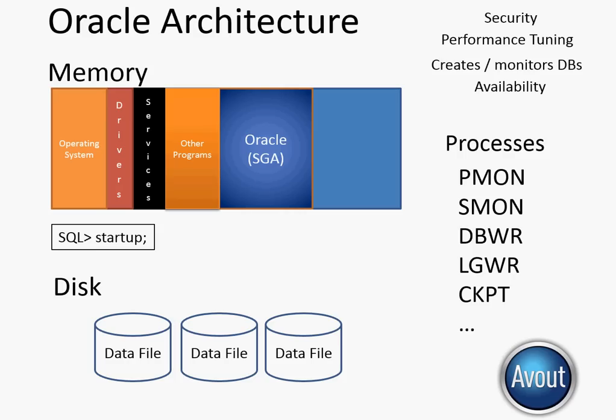In upcoming videos we'll take a look at all of these different pieces: how to set up the init.ora file, how to look at values inside the SGA, how to tune your database, and how to look at all the different background processes. Hopefully this gave you a good background on how the basic Oracle architecture is designed to give you as much availability as possible and to make your job as easy as it can be as a DBA. Understanding how all of these pieces work together will make you much more valuable as a DBA inside your organization.